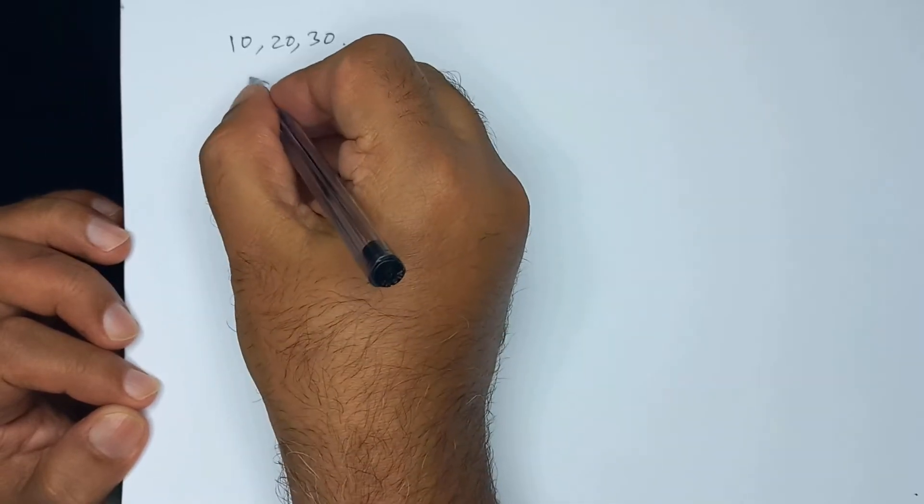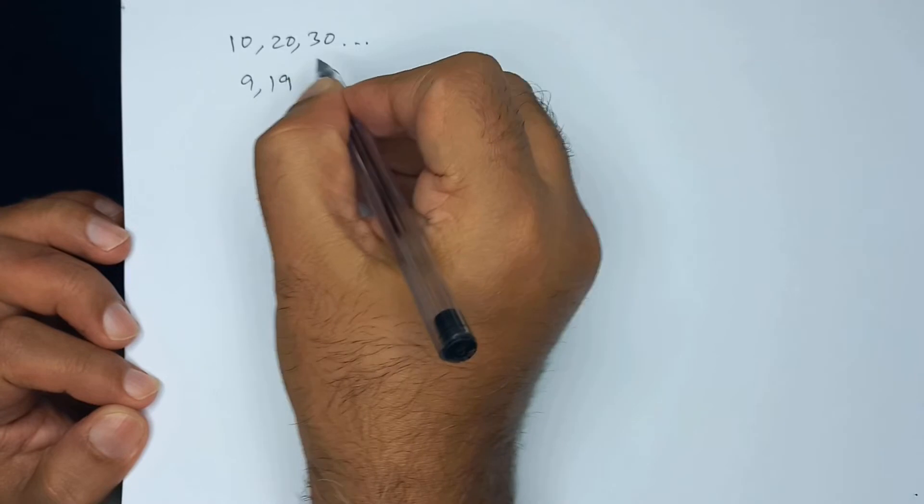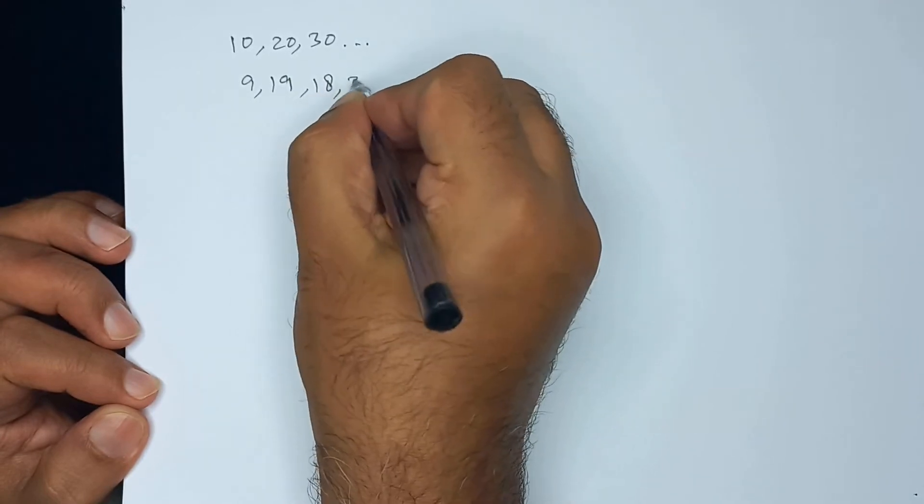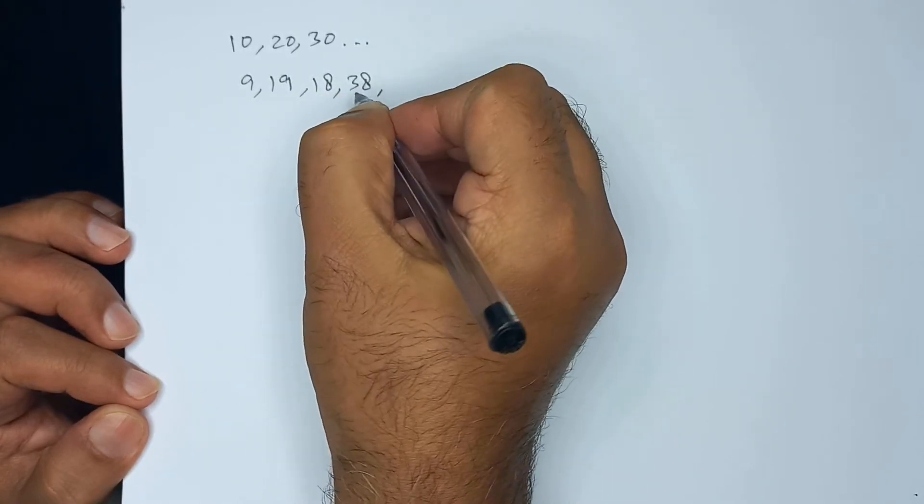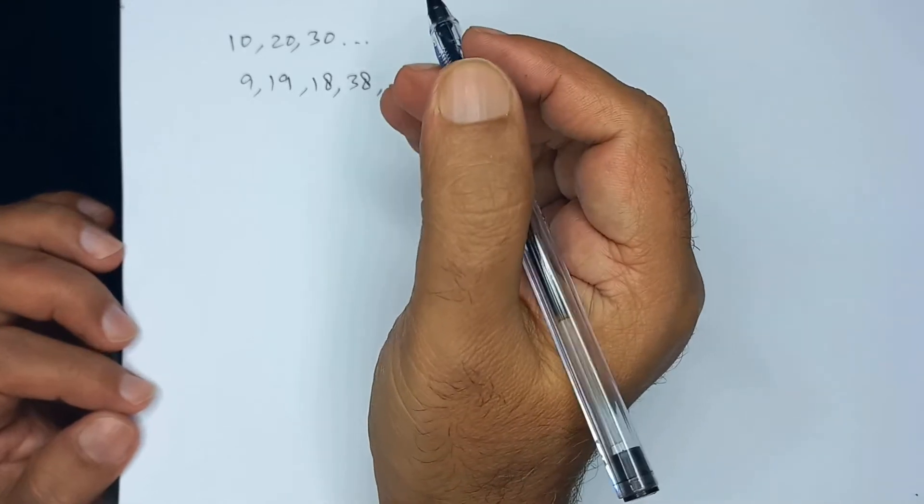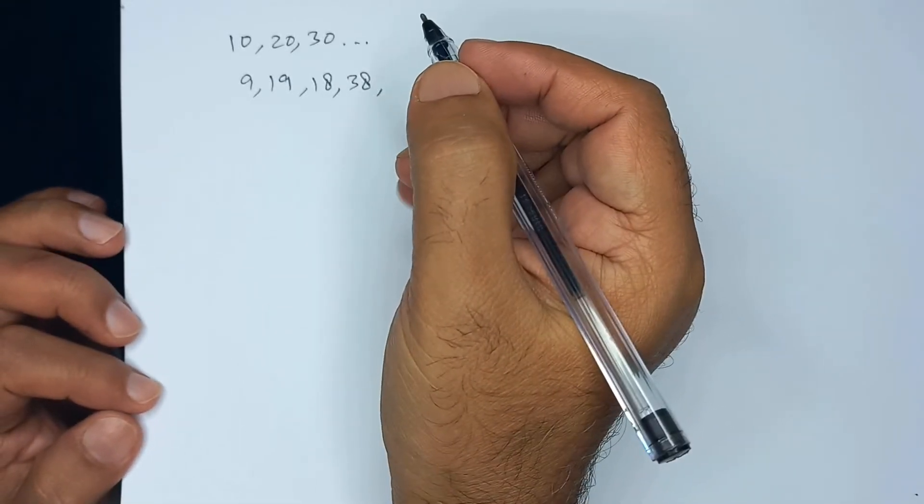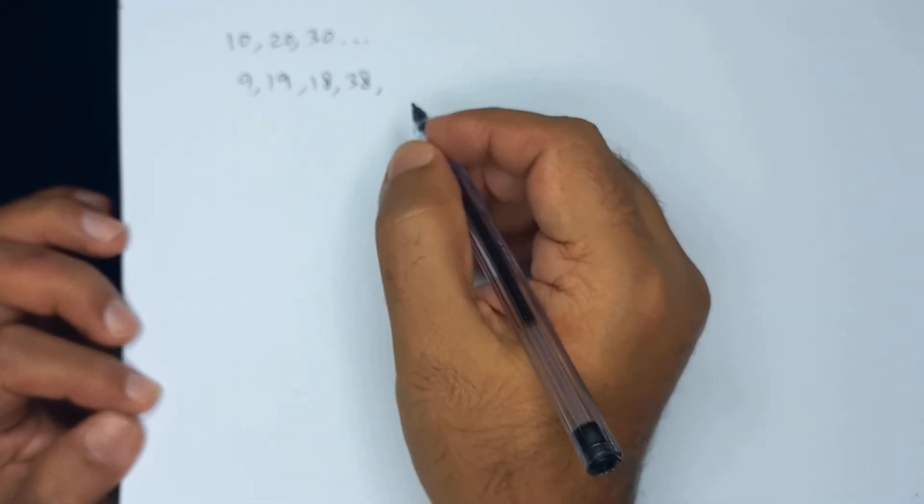Now, numbers like 9, 19, 18, 38, which are just under multiples of 10 are easy to add and subtract.